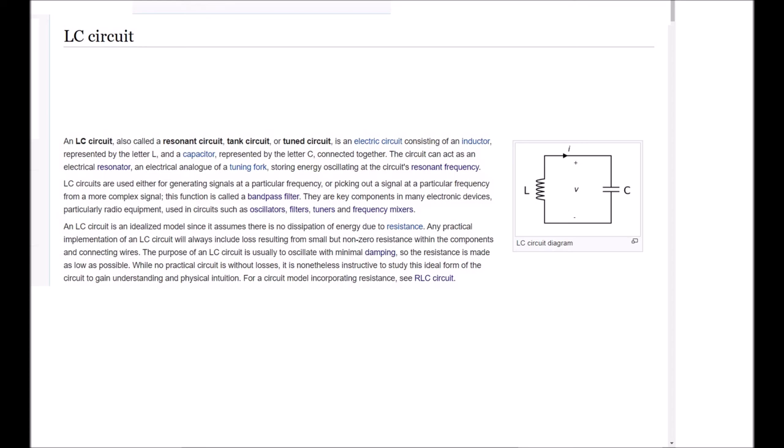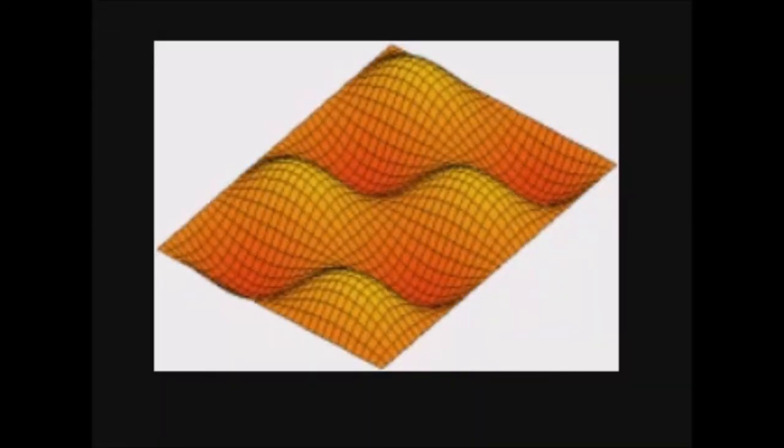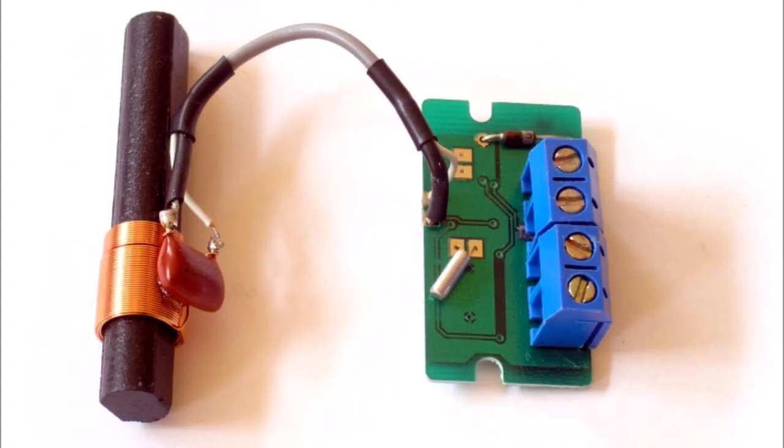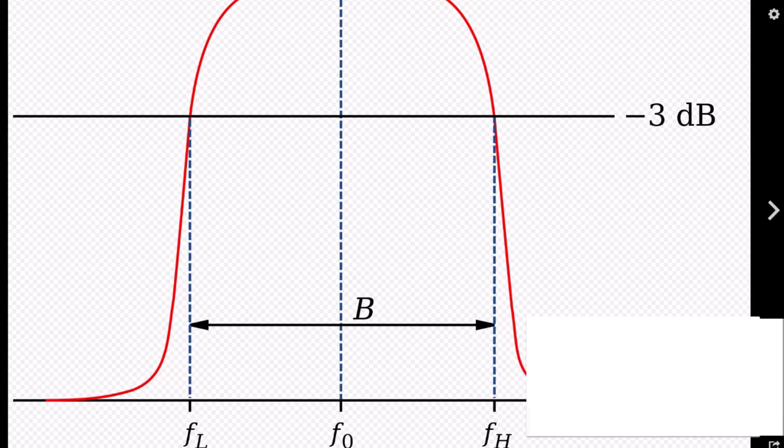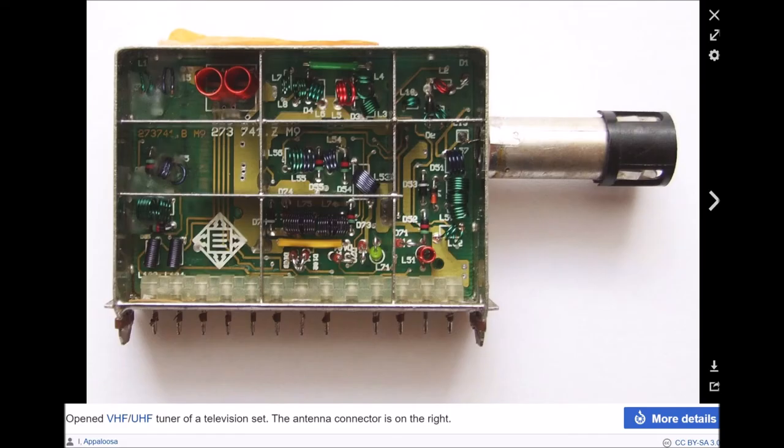An LC circuit, also called a resonant circuit, tank circuit, or tuned circuit, is an electric circuit consisting of an inductor represented by the letter L and a capacitor represented by the letter C connected together. The circuit can act as an electrical resonator, an electrical analog of a tuning fork, storing energy oscillating at the circuit's resonant frequency. LC circuits are used either for generating signals at a particular frequency or picking out a signal at a particular frequency from a more complex signal. This function is called a bandpass filter. They are key components in many electronic devices, particularly radio equipment, used in circuits such as oscillators, filters, tuners, and frequency mixers.